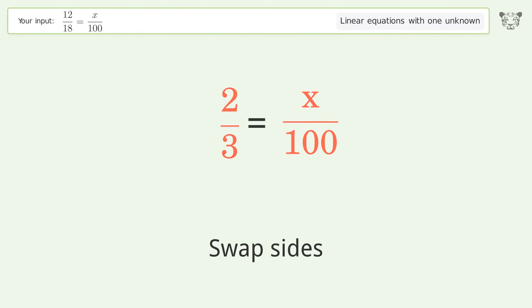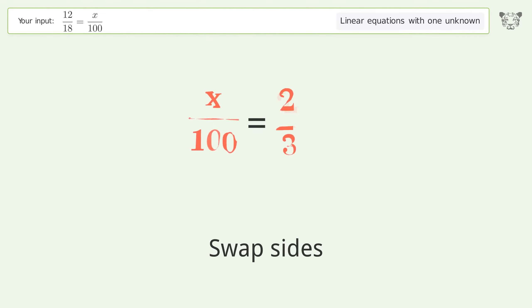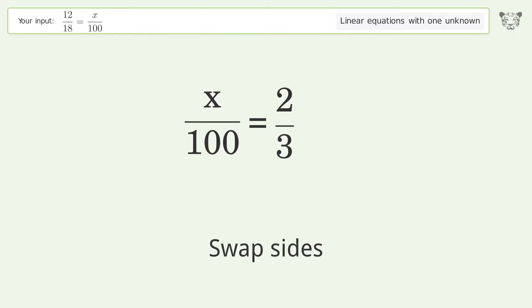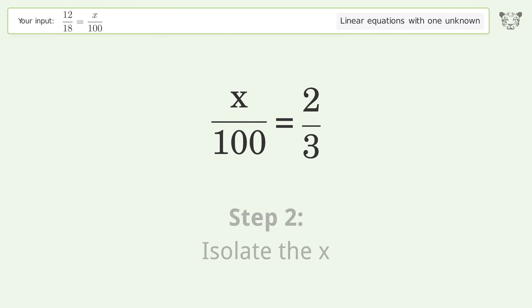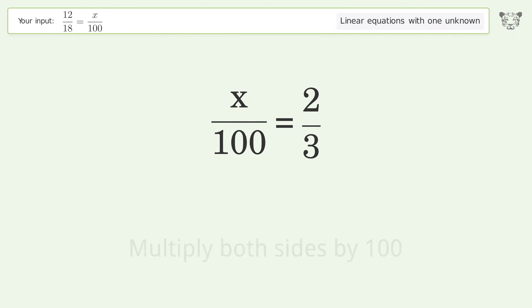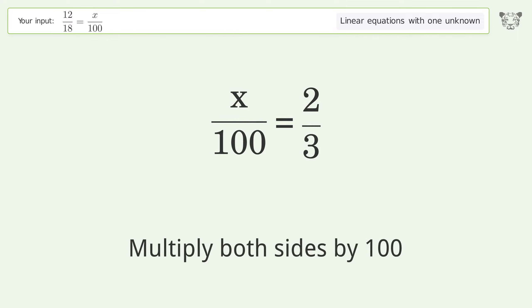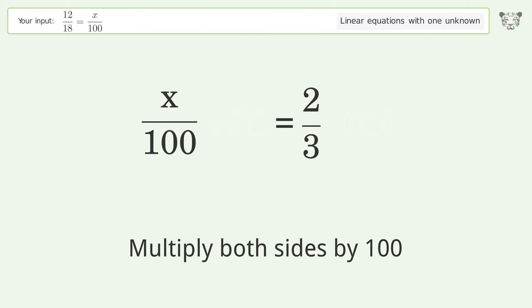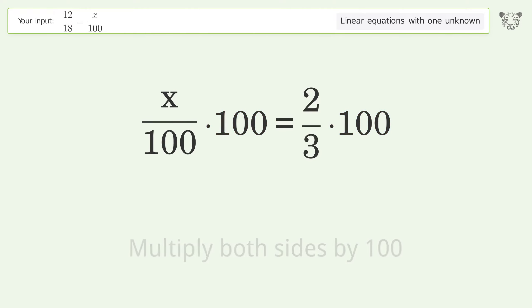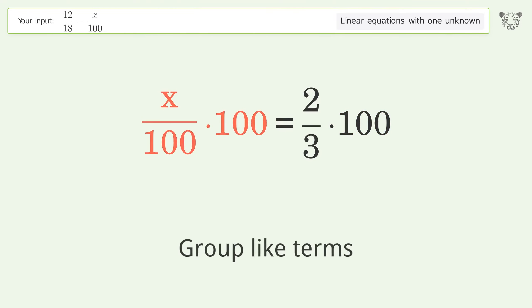Swap sides. Isolate the x: multiply both sides by 100. Group like terms.